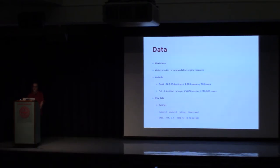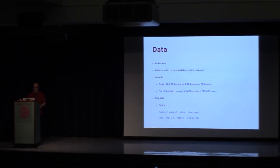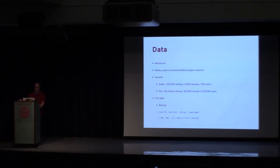To test this with real data, we used the MovieLens dataset, widely used in recommendation engine research. It has two variants: a small variant with 100,000 ratings, good for quick prototyping, and a full variant with 26 million ratings, suitable for in-depth performance analysis. We use just three fields: user ID, movie ID, and rating.